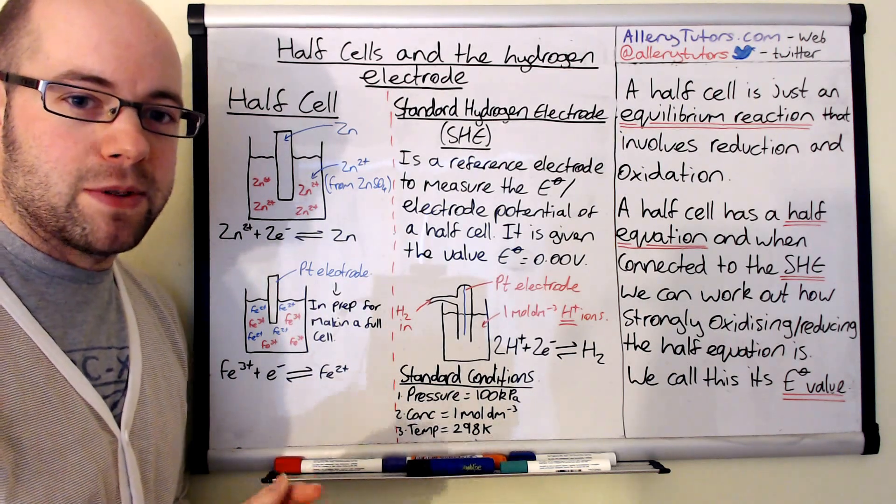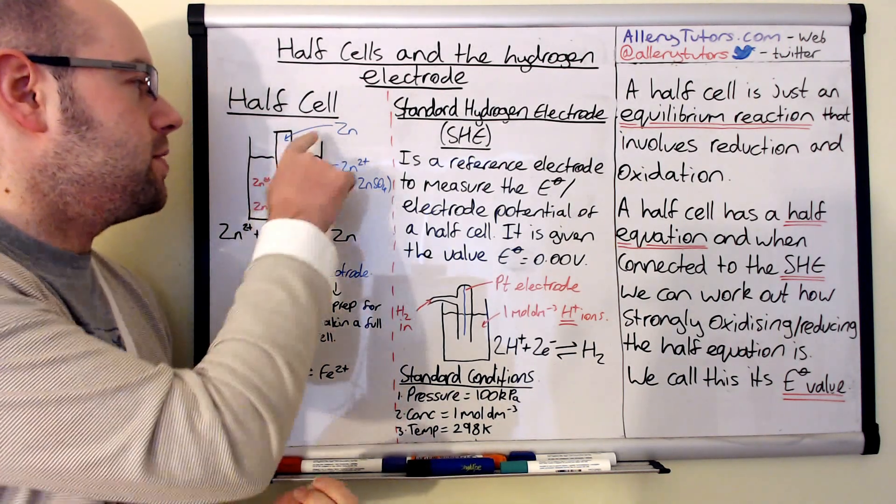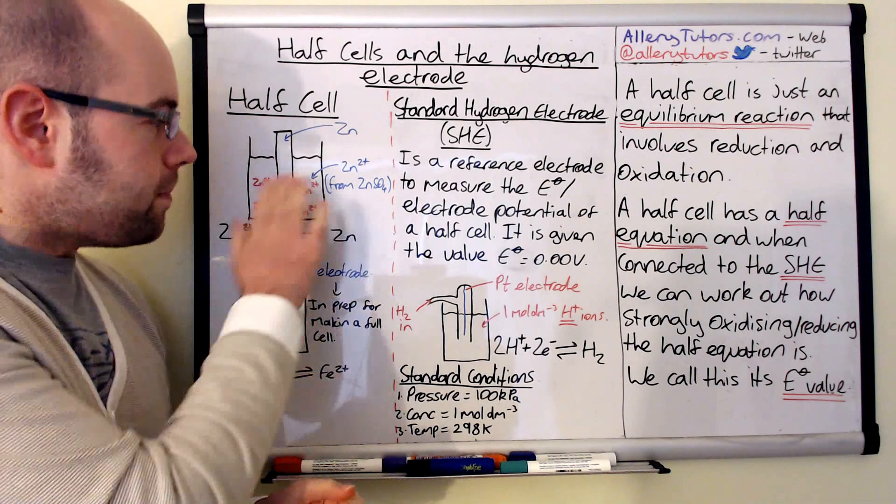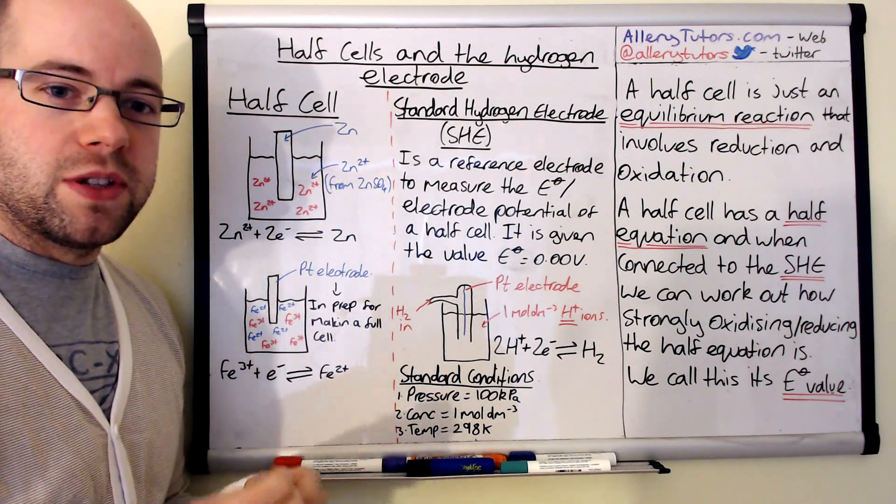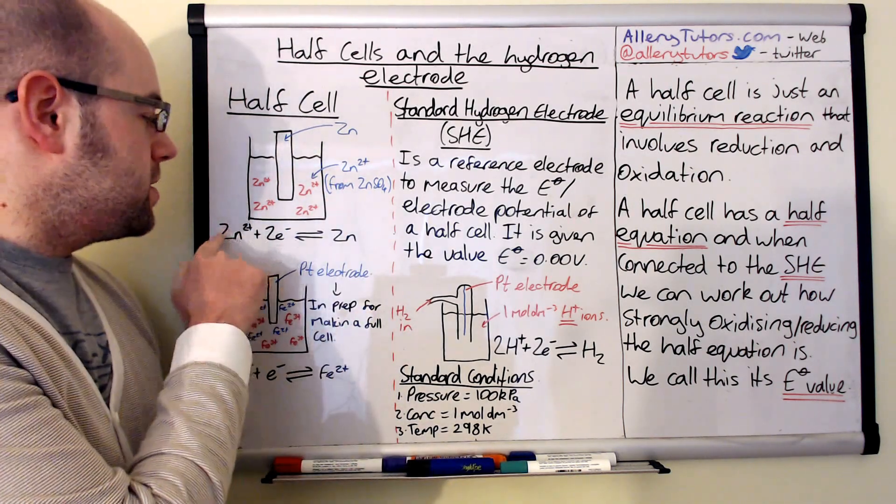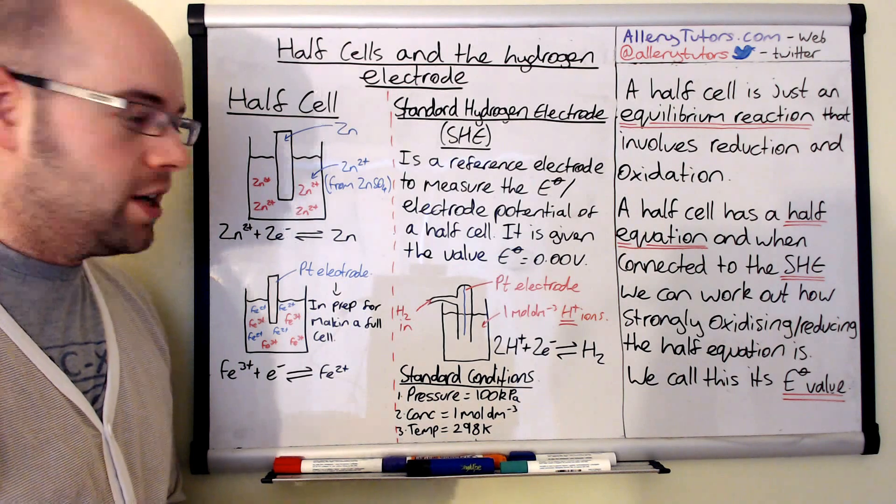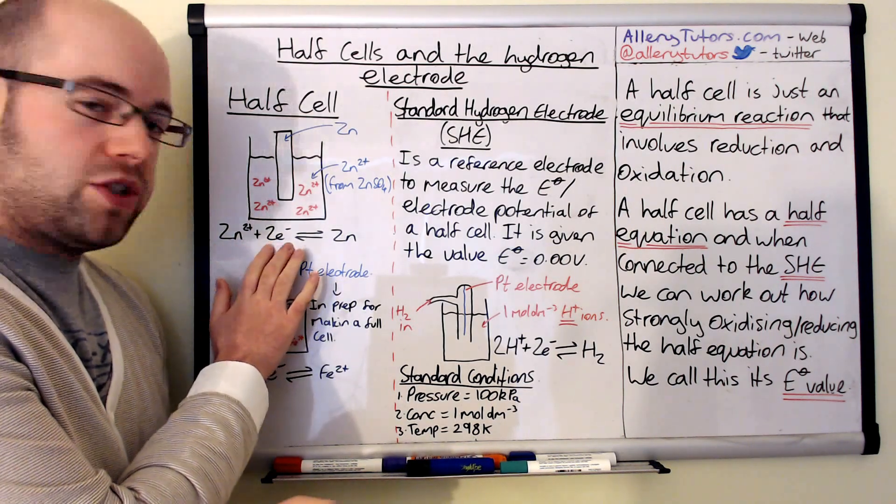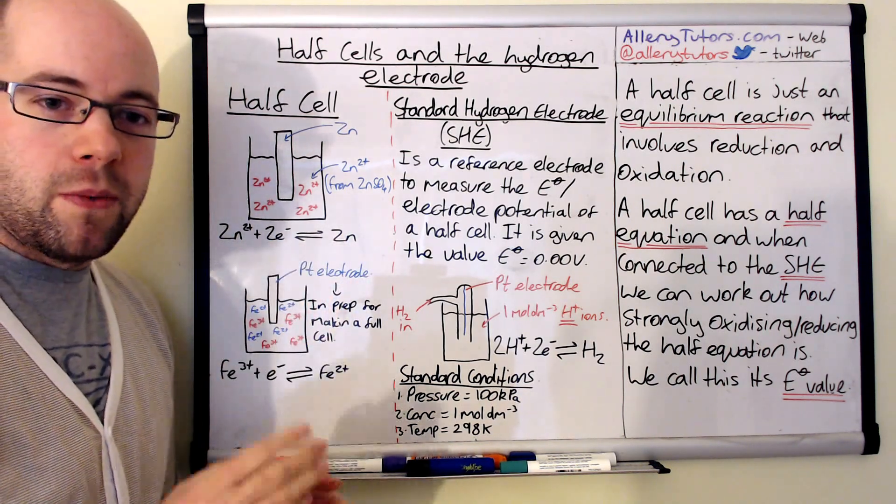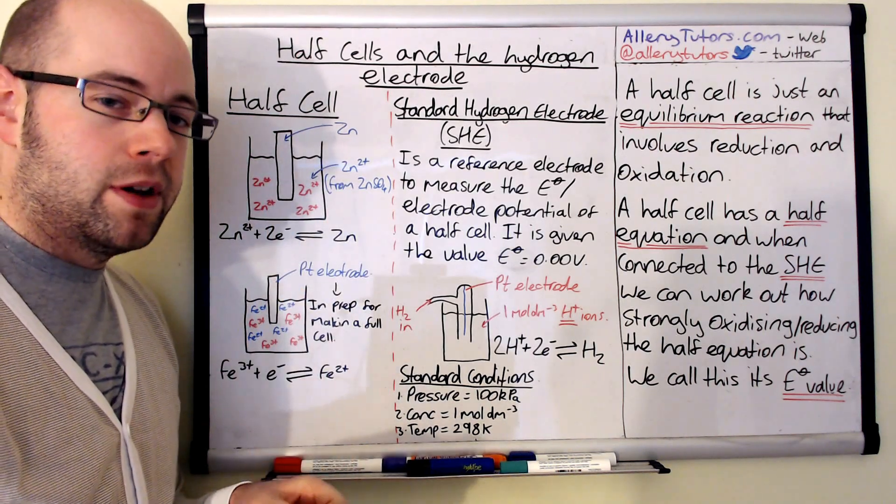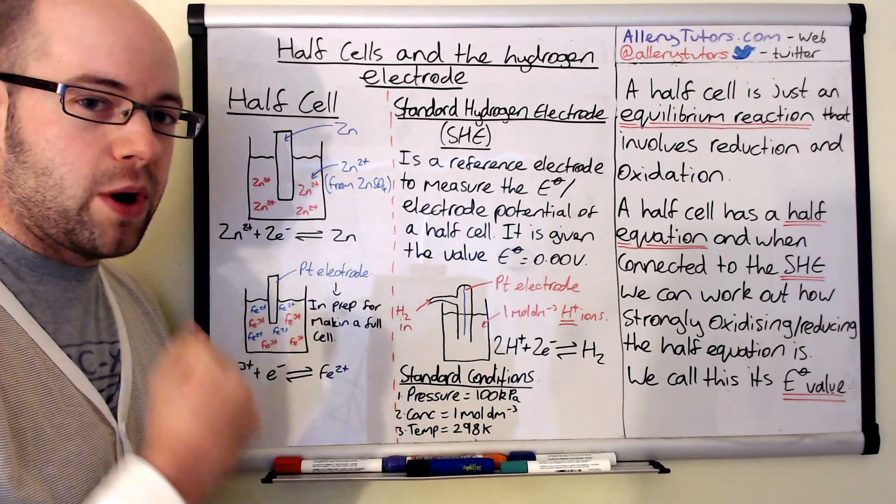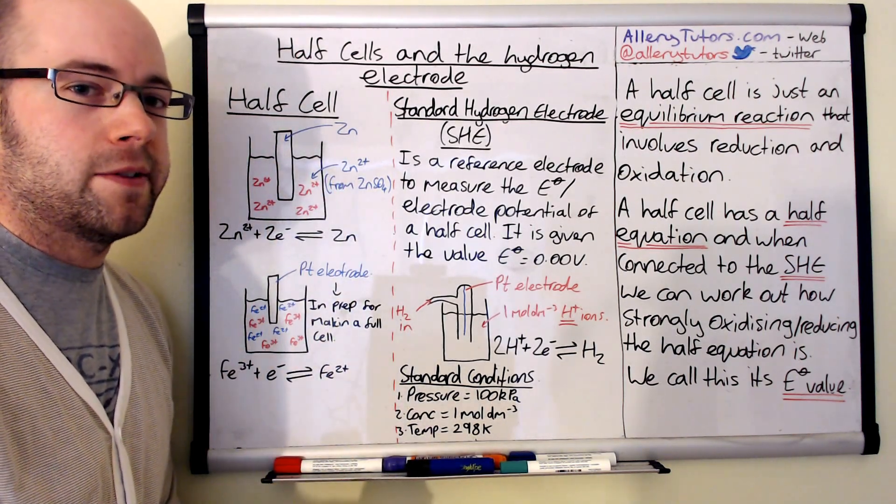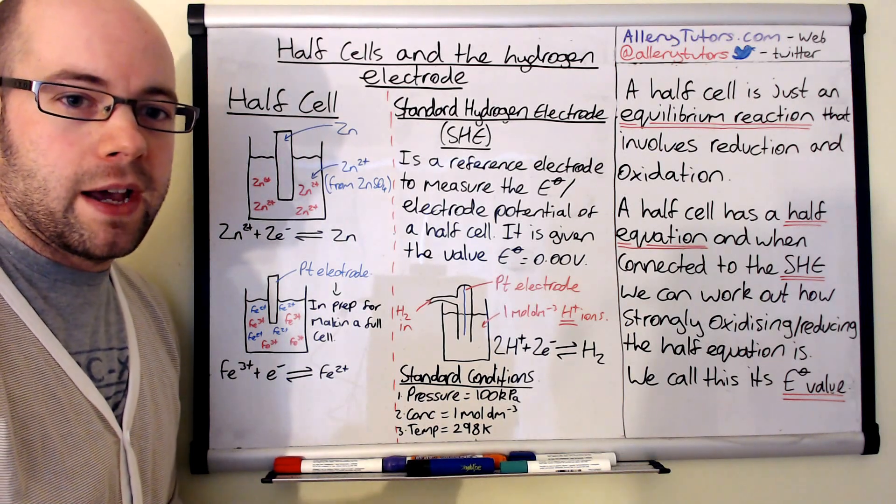We've used zinc metal and this is in equilibrium to the zinc two plus ions. You can see here, this is the reaction that occurs: zinc two plus plus two electrons is in equilibrium with zinc. This is what would naturally happen if we just put any metal in with its own ions of the same atom.